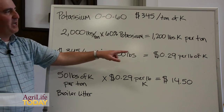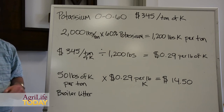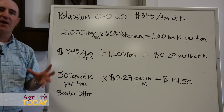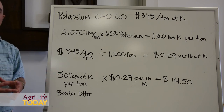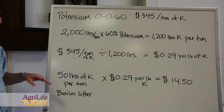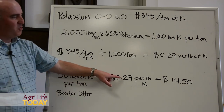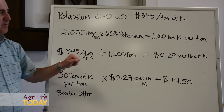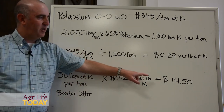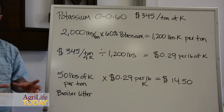If that ton costs us $345, we take $345 divided by our 1,200 pounds of potassium per ton, and that tells us for each pound of potassium it would cost us approximately $0.29. Going back to our average values for broiler litter, broiler litter is going to contain roughly 50 pounds of potassium per ton. We multiply that by $0.29 per pound, and that tells us per ton of broiler litter we have roughly $14.50 worth of potassium.